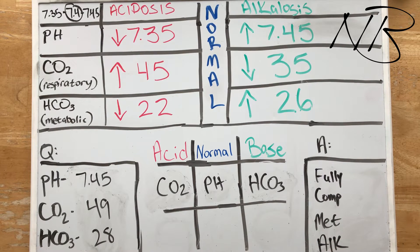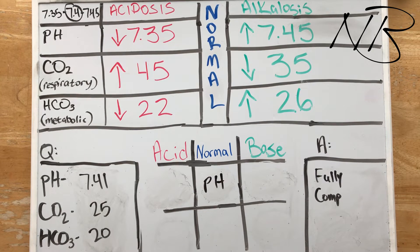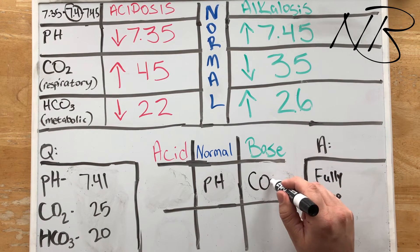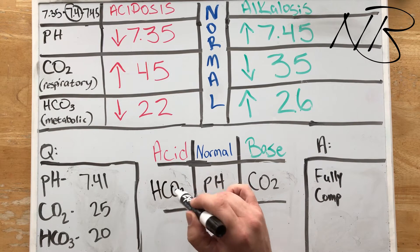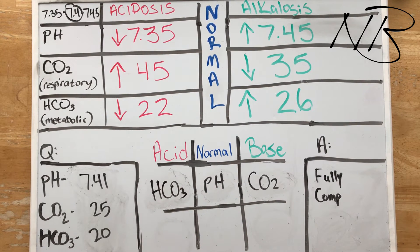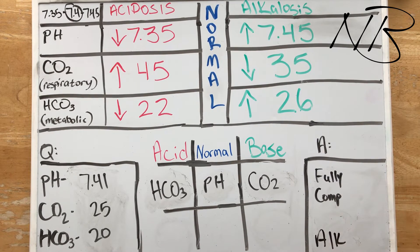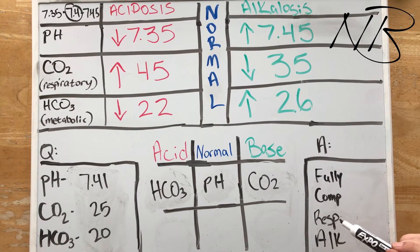For our fifth and final question, we have a pH of 7.41, which is normal. Our CO2 is 25, which is less than 35, so we're in a state of alkalosis. Our bicarb is 20, which is less than 22, so we're in the acid column. 7.41 is above 7.4, pushing more towards a state of alkalosis — so we know our patient is in an alkalotic state. What's causing it? It's our respiratory system. So this patient is in a state of respiratory alkalosis — something needs to be done about it, but they are, for now, fully compensating, hence the normal blood pH.